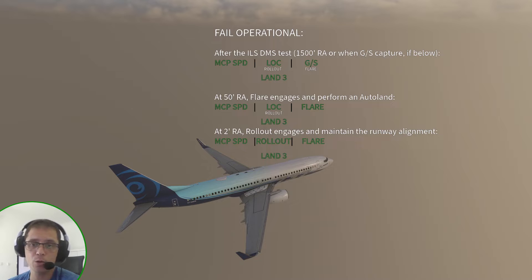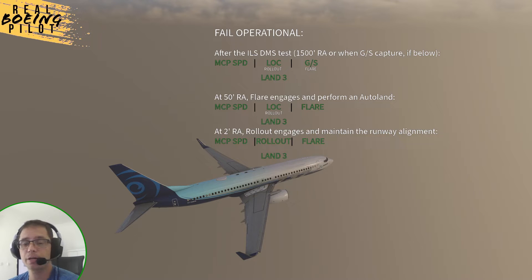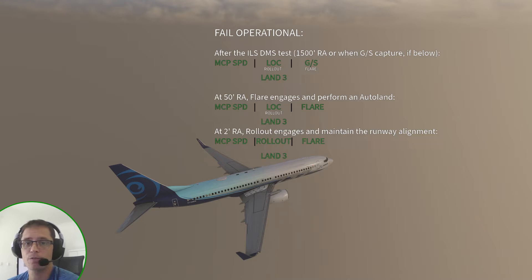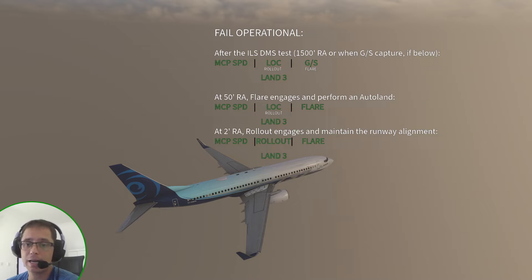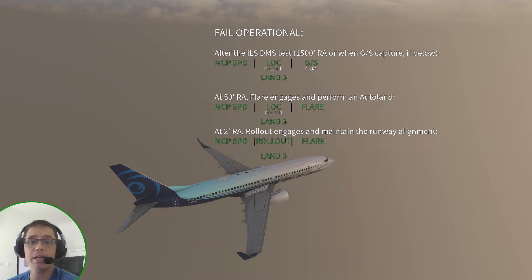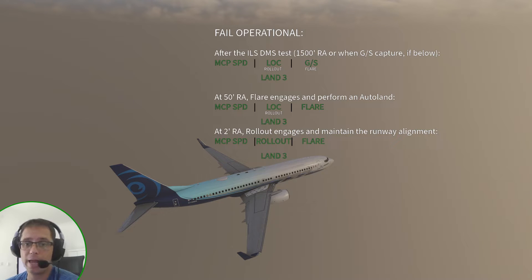Also, the single channel indication is not going to be replaced by command — it's going to be replaced by land 3. Then, the same thing happens at 50 feet: the flare will engage and perform an autoland just like in the previous video. But on the fail operational airplane, you also have the rollout mode, which means that at 2 feet radio altimeter — when the airplane is touching down — the rollout mode will engage and maintain the runway alignment without any pilot intervention.